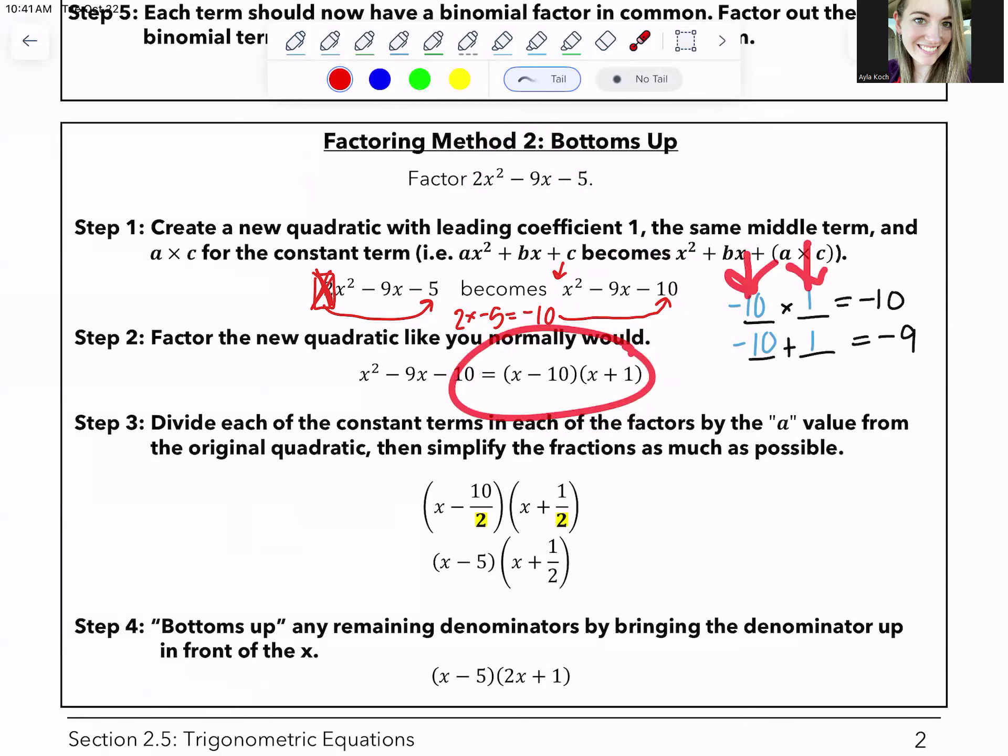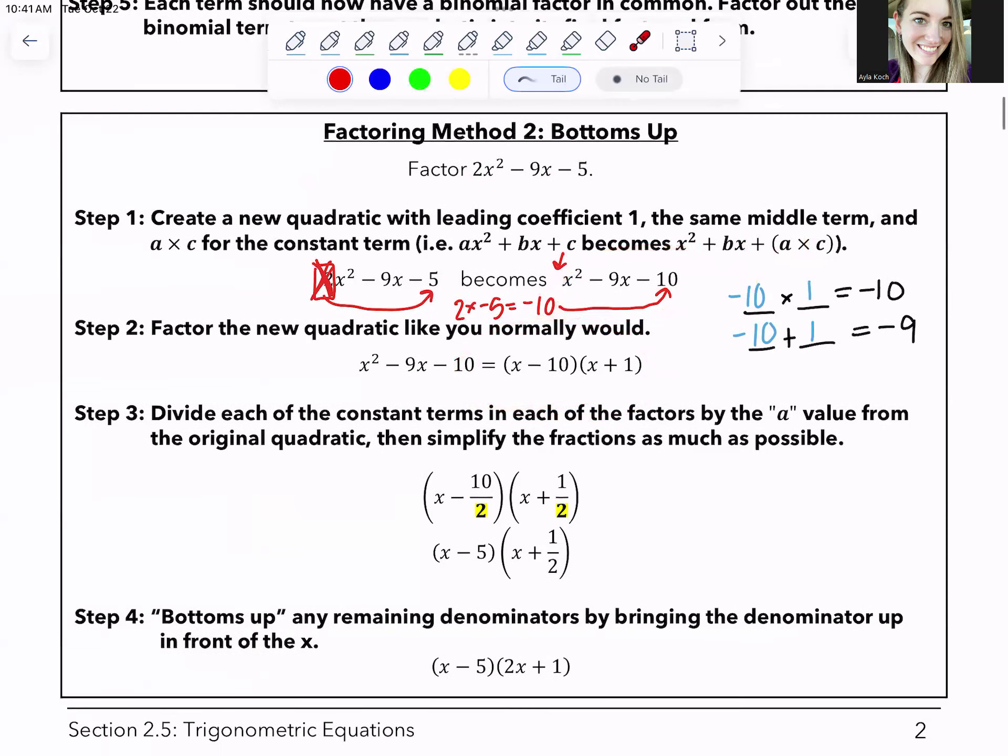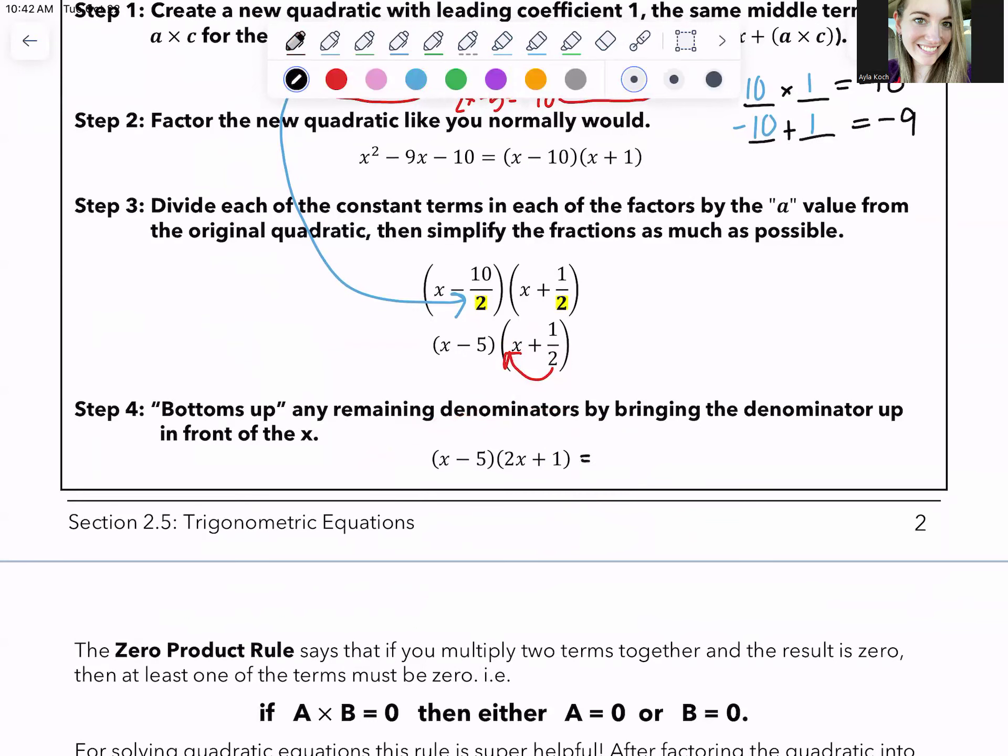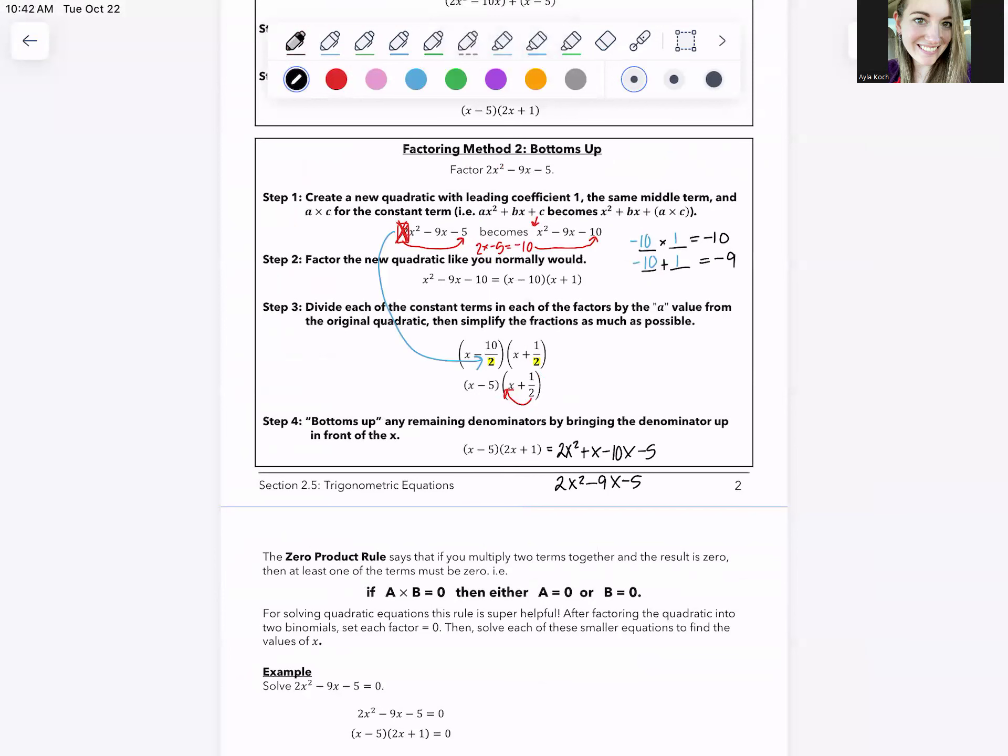Negative 10 plus 1 is negative 9. Negative 10 times 1 is negative 10. And then there it is factored, right? There's the negative 10 and the 1. And then, once you have factored this random new quadratic that you've made, you then take each of these terms that you found those numbers up here, divide them by whatever number you disappeared up here. So this 2 is what's being divided. Then you simplify the fraction. So 10 divided by 2 becomes 5. 1 half can't be simplified any further. And then any denominators that are left over get brought back up. And boom, so this 2 comes up here and then it's just a 1 here. This is the correct factoring.